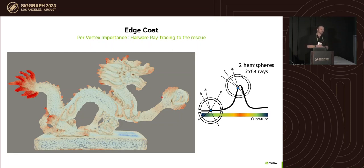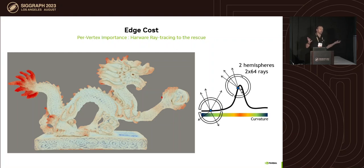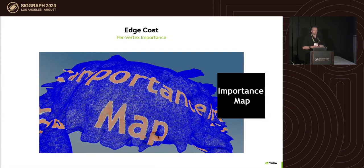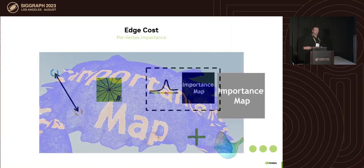For each vertex of the mesh we kick off 128 rays — two times 64 rays over two hemispheres — scattered to about two to five percent of the model size. We see how they hit the neighbors and the shape itself. The more hits, the more curvature; if it's flat you hit less. Using artificial colors we end up with a map of areas where information needs to be preserved. If an edge uses high-curvature vertices, it may be something you want to keep and not collapse. We can also import an importance map from other applications.